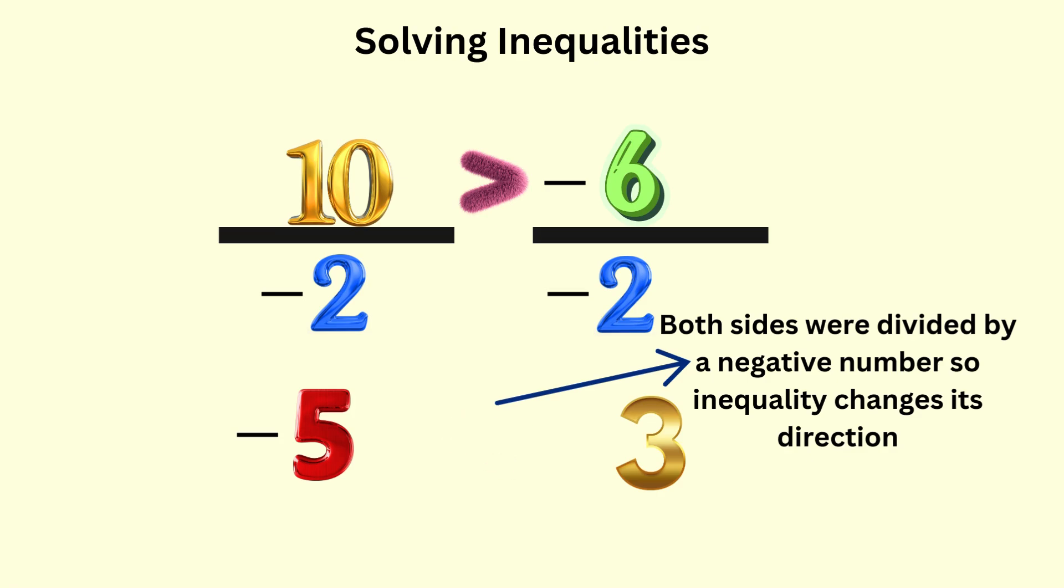Notice that if we divide both sides by positive 2, there is no need to change its direction, because we will get 5 is greater than negative 3, which is actually true.